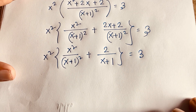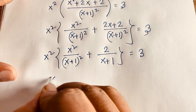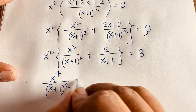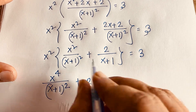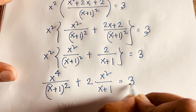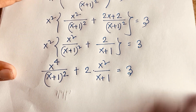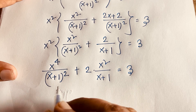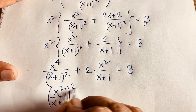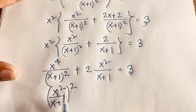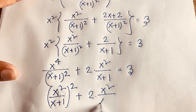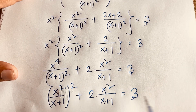Now x squared times x squared gives x to the power 4 over (x+1) squared, plus x squared over (x+1) whole squared, plus 2 times x squared over (x+1) equals 3. Recognizing the structure, we see that (x⁴/(x+1)²) is (x²/(x+1))² and the expression becomes u² + 2u = 3 after substitution.